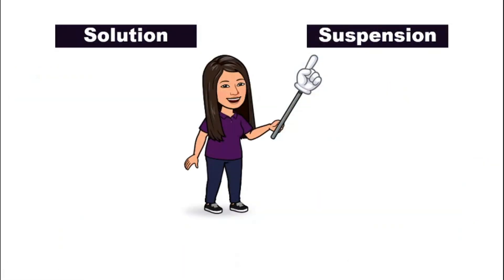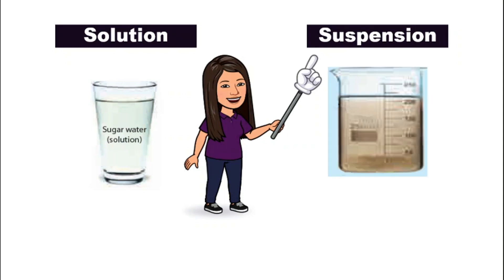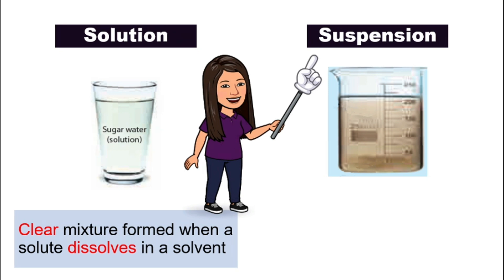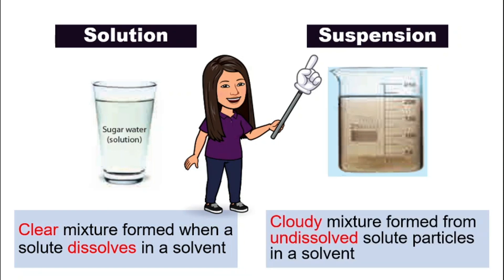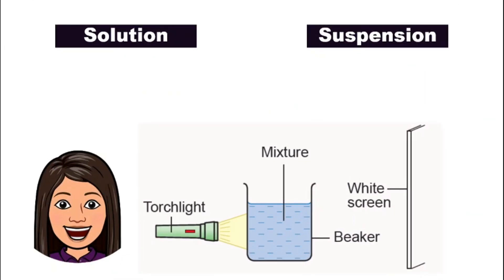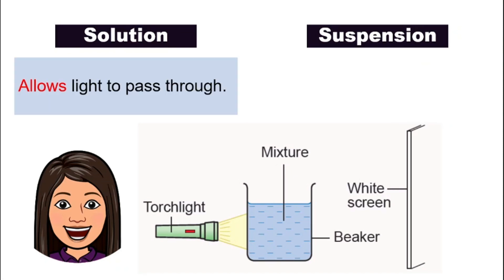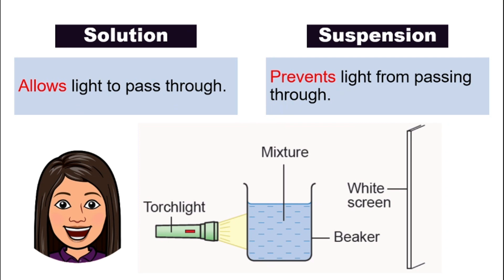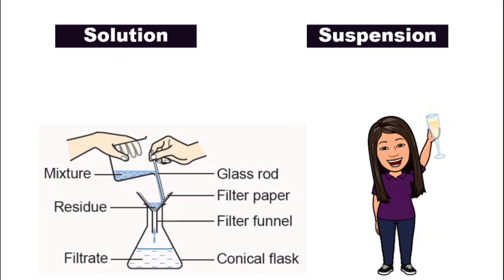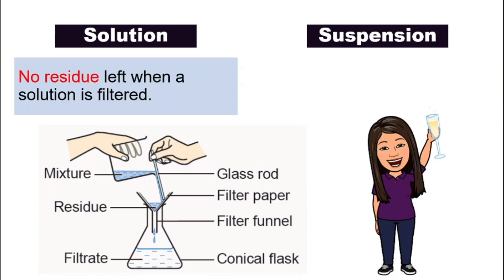Let's compare between solution and suspension. An example for solution will be sugar water, and one example for suspension will be sand water. Solution is a clear mixture when solute dissolves in a solvent. A suspension is a cloudy mixture — you can see it is very cloudy — formed from undissolved solute particles in a solvent. Also, if we flash a torchlight across solution and suspension, they give different results. For solution, it will allow light to pass through, whereas suspension will prevent light from passing through. If we filter the solution, you will find that there is no residue left on the filter paper. For example, if we filter the sugar water, the water that comes out into the conical flask will still be sugar water, and on the filter paper it should be clean — there will be no sugar left, because you cannot separate it through filtration.